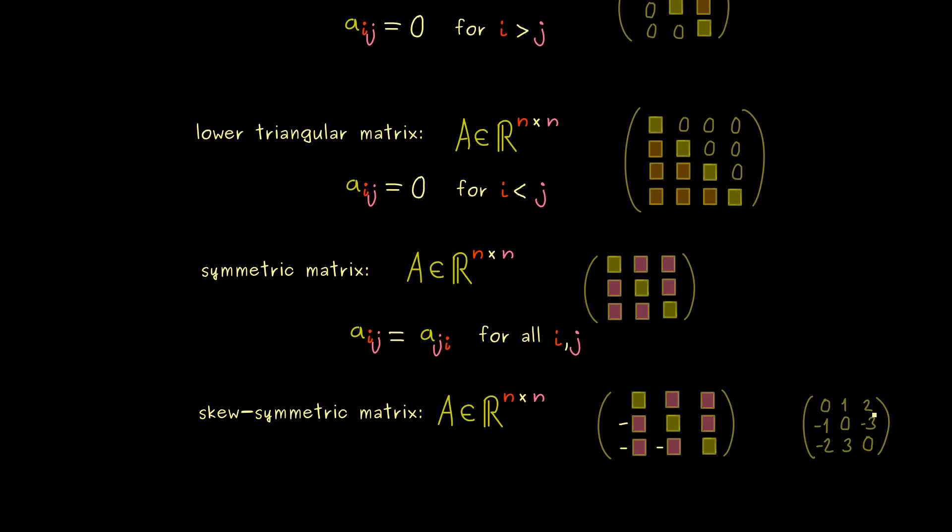So there you should see this entry here should be the same as this entry here with the exception of a factor minus 1 and of course we need this for all entries here. Hence because this sign change should also happen on the main diagonal we don't have any choice by choosing zeros there.